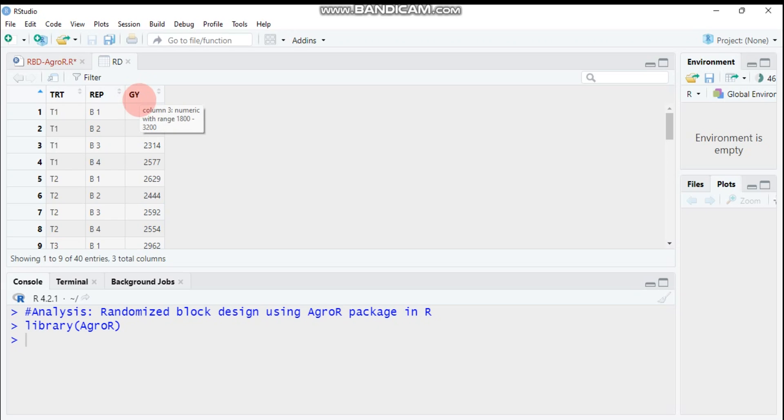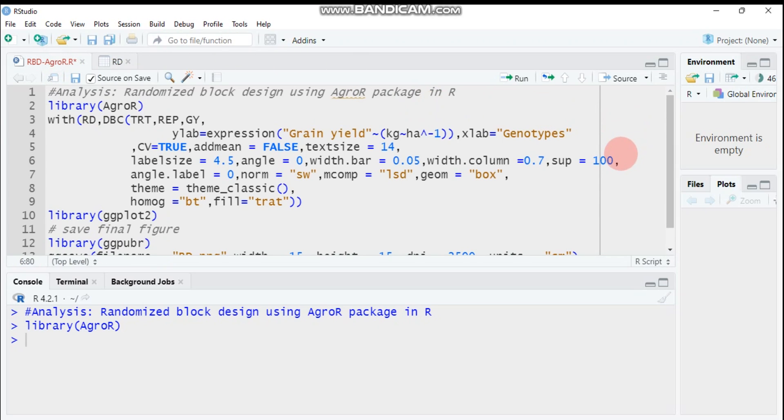But in our case here, it's a hundred because the response variable grain yield reaches up to three thousand kilograms per hectare. The number is too huge, so you have to increase the number from 0.05 to 100, or you have to scale it based on your response variable value.